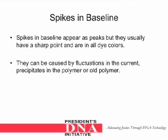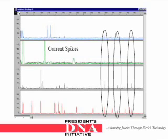Spikes in the baseline appear as peaks, but they usually have a sharp point and are in all dye colors. They can be caused by fluctuations in the current, precipitates in the polymer, or old polymer. Here is an example of spikes in the baseline: they tend to have sharp points and are present in all of the colors.